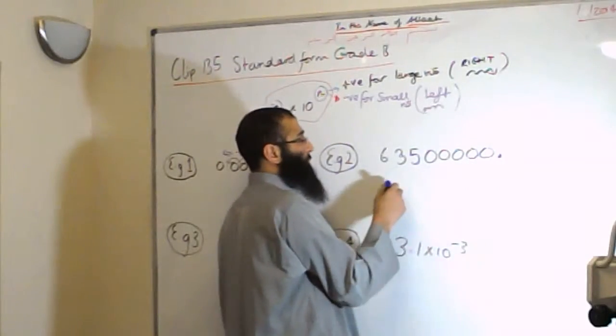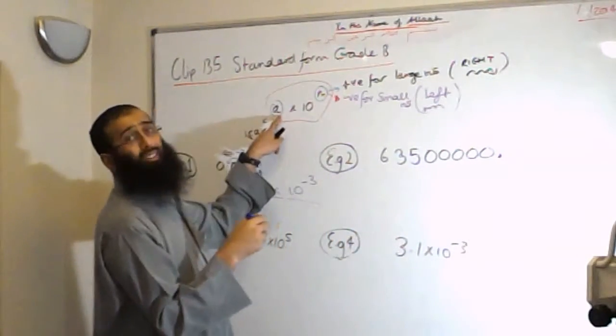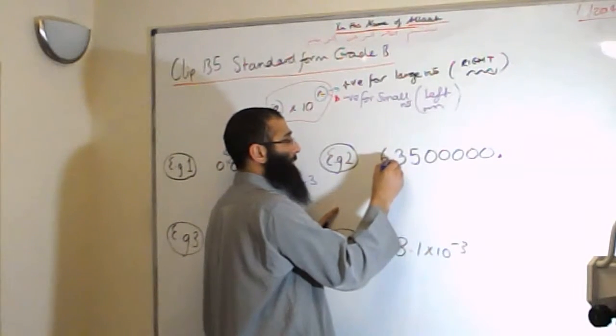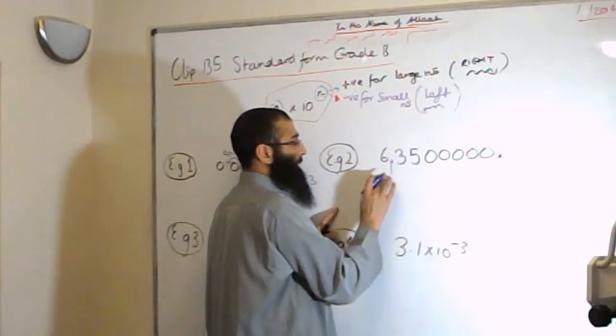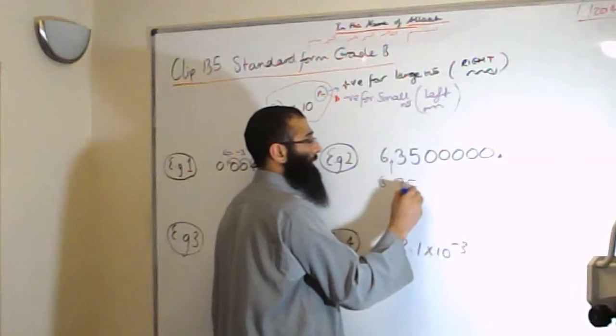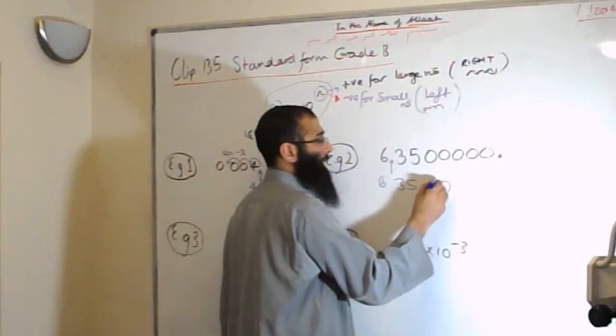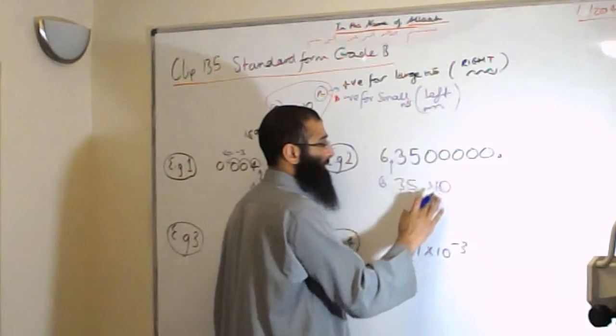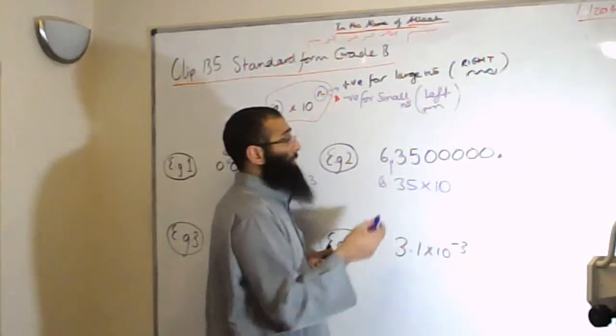But we want this number to read, the first value is A, between 1 and 10. So we are going to put the decimal point in here. So the number will then read 6.35. Then we are going to multiply it by 10.